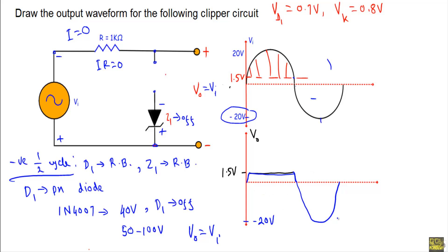So this will be our complete output waveform: during the positive half cycle up to 1.5V it will follow the input voltage; after that it will be fixed at +1.5V; and during the negative half cycle the output will follow the input voltage down to -20V.